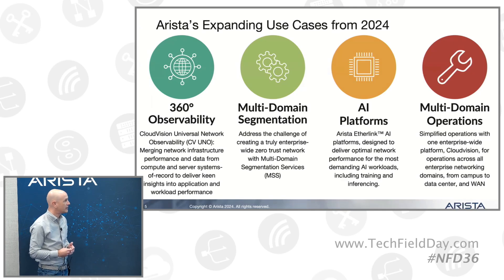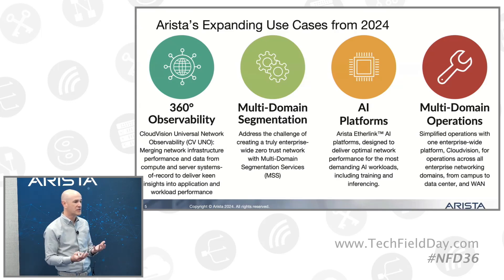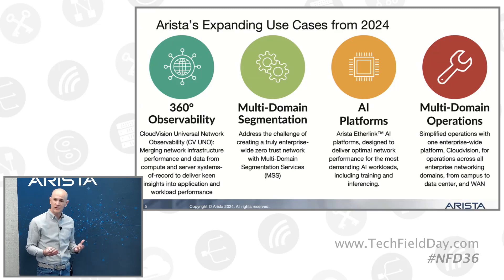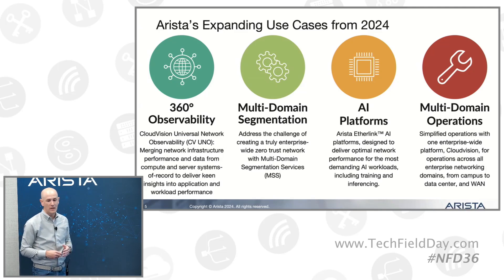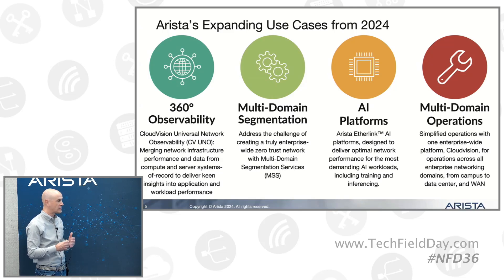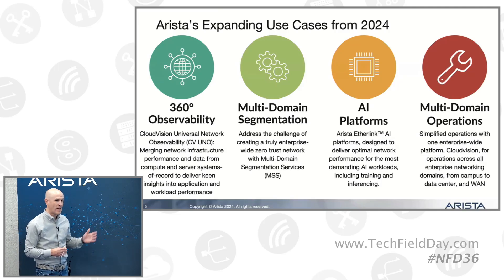Let's catch you up on what we've been up to this calendar year from an Arista perspective. We expanded our telemetry solution to what we call 360-degree observability with a new capability within the CloudVision product called CloudVision Uno — Universal Network Observability. Profil is going to show you a demo: it's how we take network data and marry it with broader data sets, including application data and third-party data, to provide better insights. We've also introduced our latest generation of security solutions with multi-domain segmentation, and a whole new portfolio focused on AI cluster backend networking infrastructure — the Etherlink AI portfolio — back in the June timeframe.